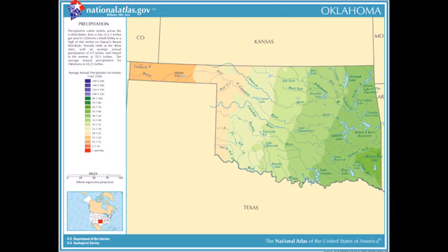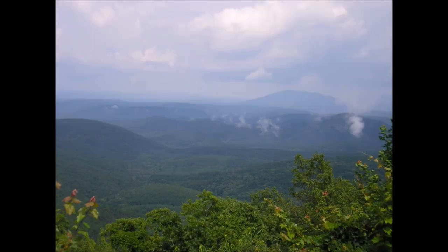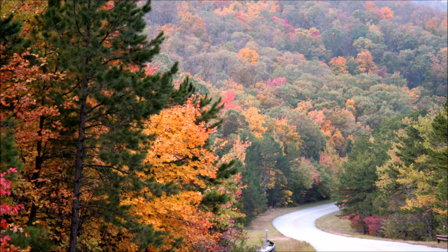The further one travels east within the state of Oklahoma, the wetter, more hilly and mountainous the state becomes, and the greener it becomes. Eastern Oklahoma is by far the most mountainous, hilliest, greenest, and wettest part of the state. Parts of the Ozark and Ouachita Mountains, which are associated with the states of Arkansas and Missouri, are located in Oklahoma, particularly eastern Oklahoma.